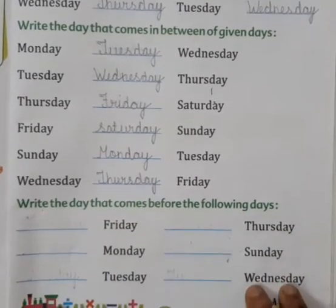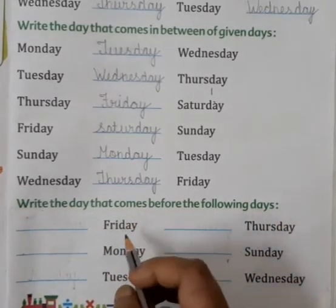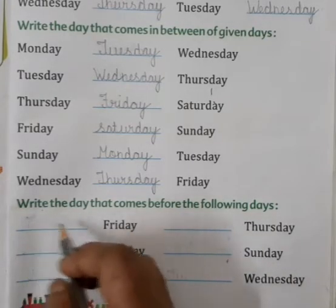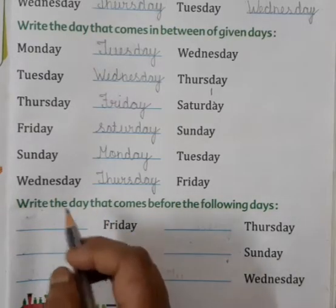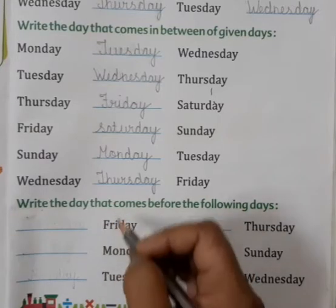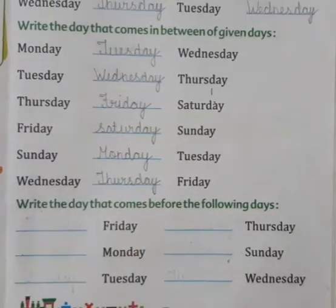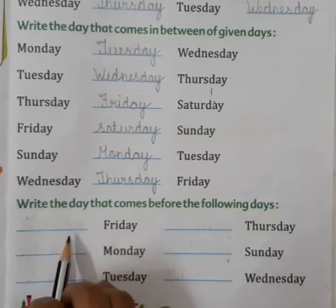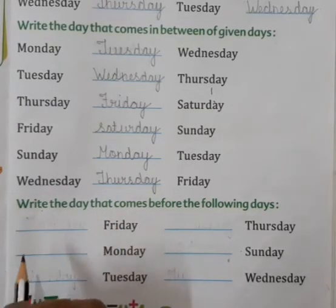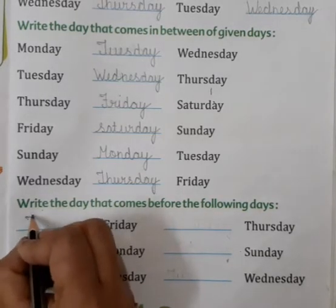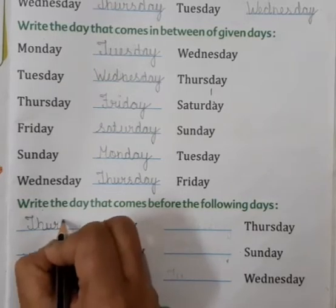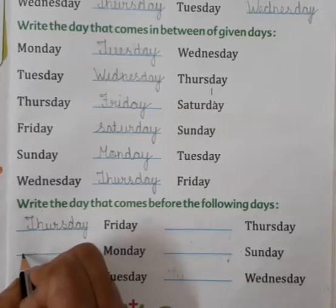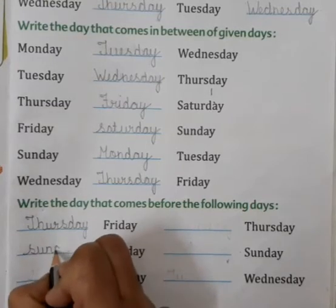Now next topic is: write the day that comes before the following days. Here are some days and we have to write just before the following days in blank spaces. Before means pehle. So in given days we have to write just before the following days. This is Friday and you can see a blank space — Friday se pehle aata hai Thursday. T-H-U-R-S-D-A-Y, Thursday. Now this is Monday — Monday se pehle aata hai Sunday. S-U-N-D-A-Y, Sunday.